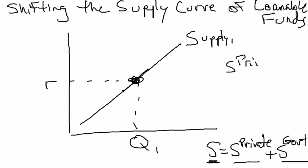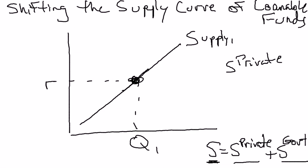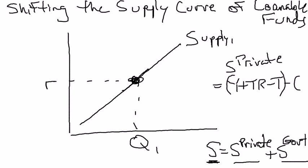Private savings is equal to all your income plus all your transfer payments minus taxes minus consumption. That term in parentheses is disposable income, and you subtract off consumption — that's private savings.